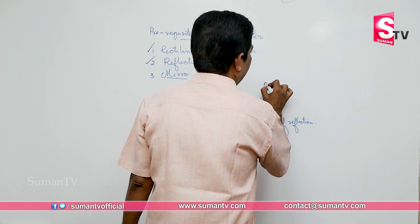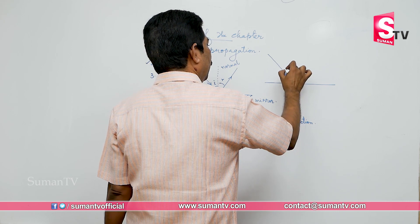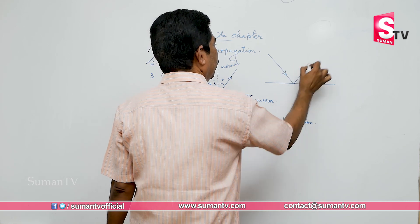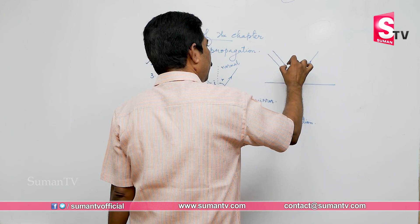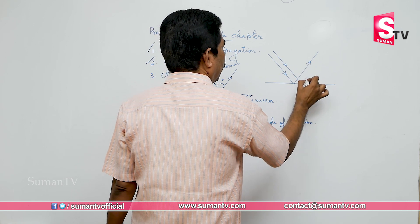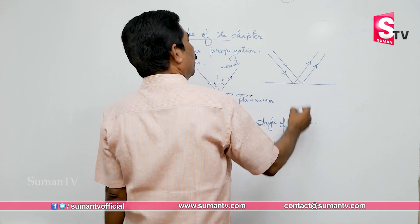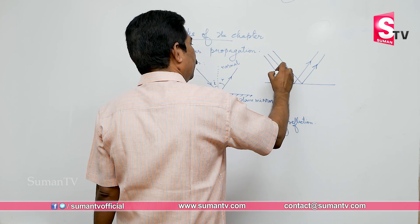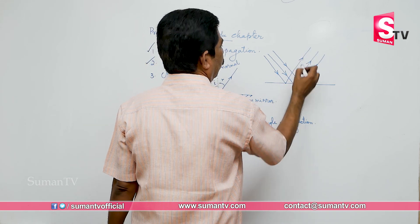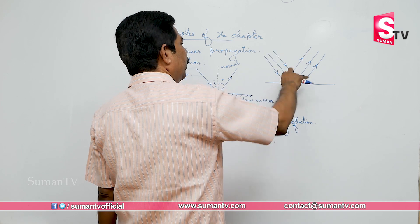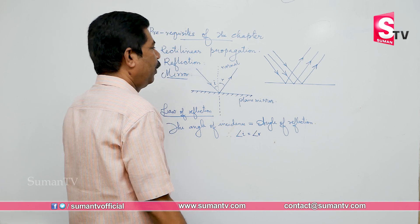What is meant by regular reflection? Suppose light travels here — one light ray is reflected, and another light ray drawn parallel to the first is reflected parallel to the previous reflected light. One more light ray is also reflected parallel to the previous reflected rays. So the incident rays and the reflected rays remain parallel. This kind of reflection is called regular reflection.